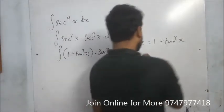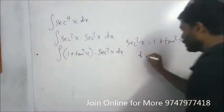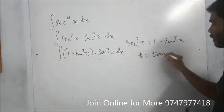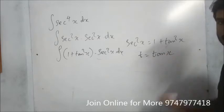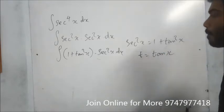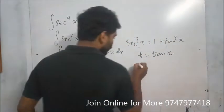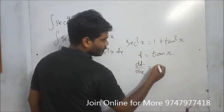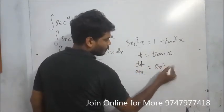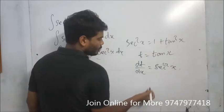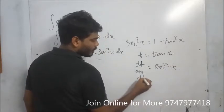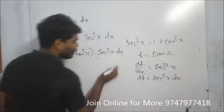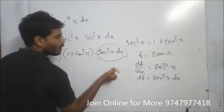Let t equal tan x. Then dt by dx equals sec²x, so dt equals sec²x dx. Instead of sec²x dx, we can write dt.